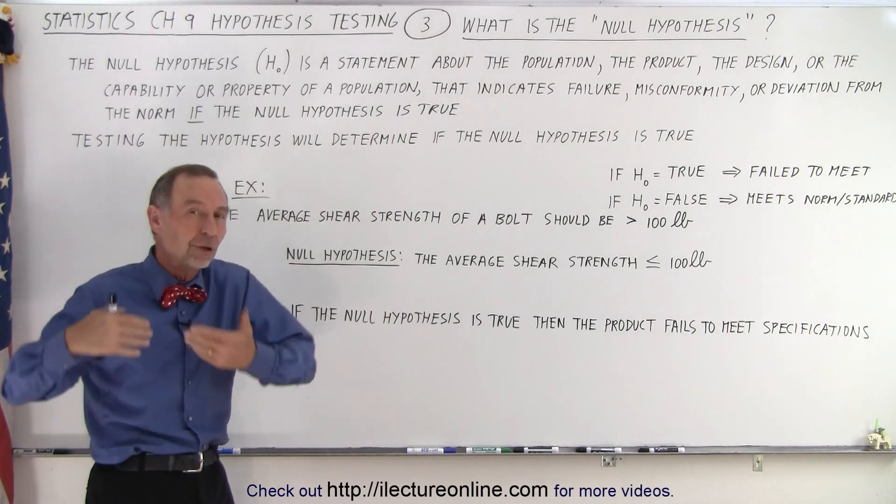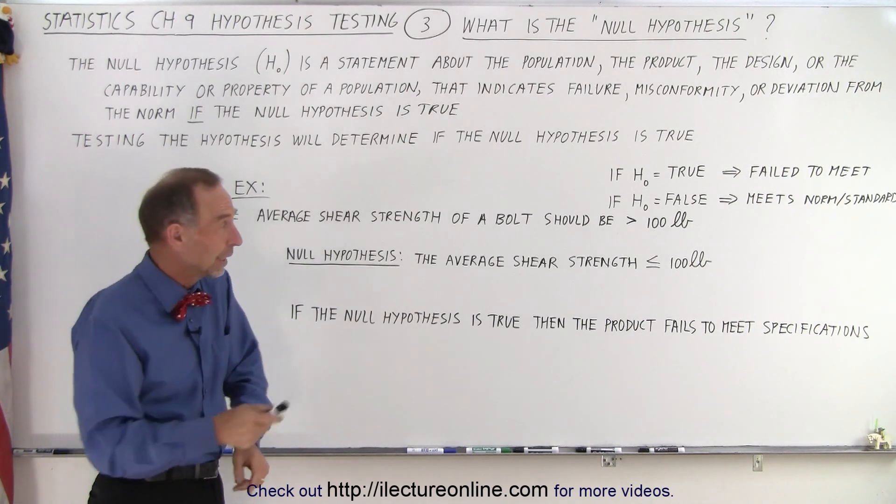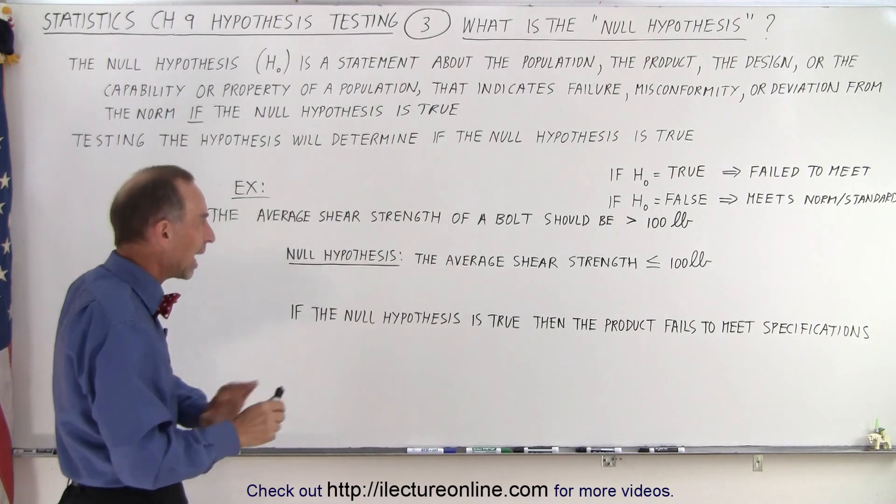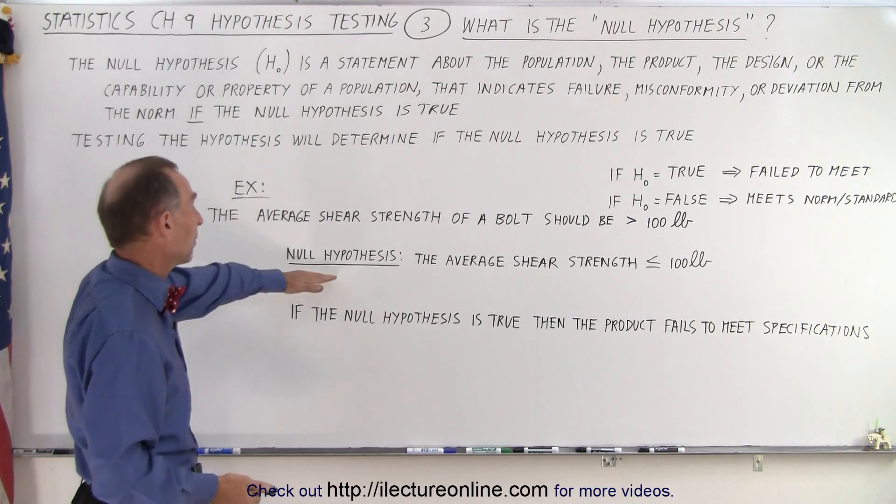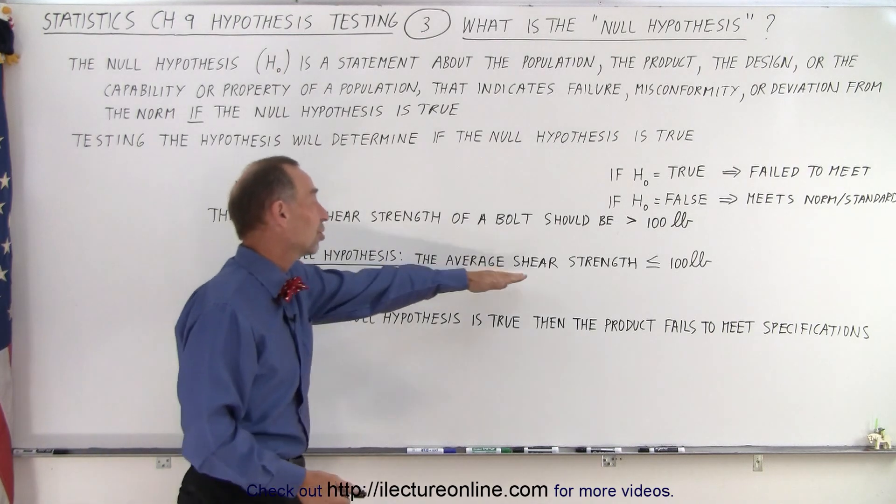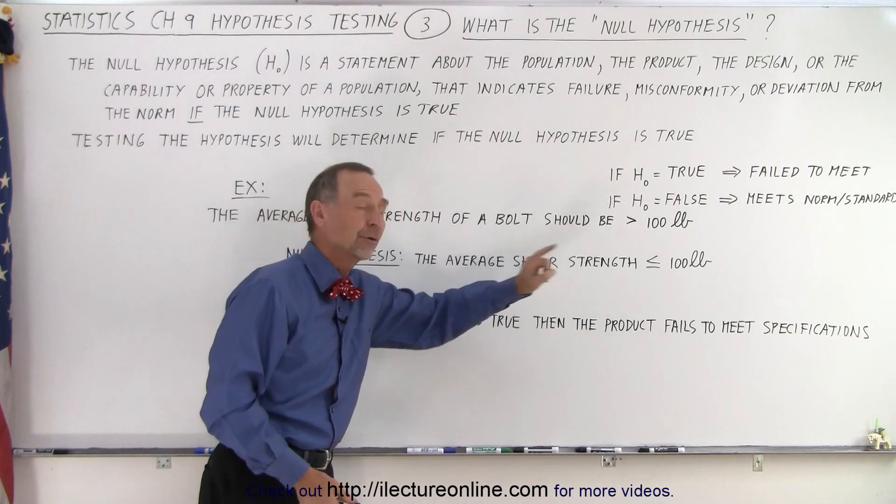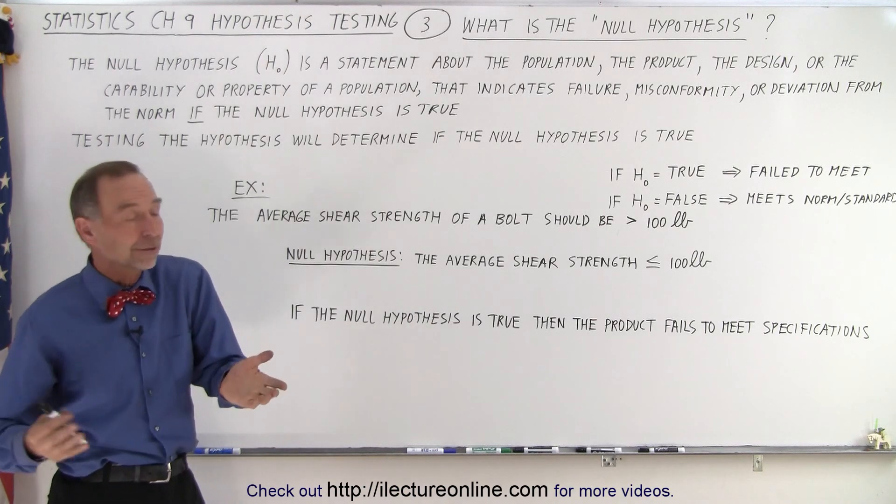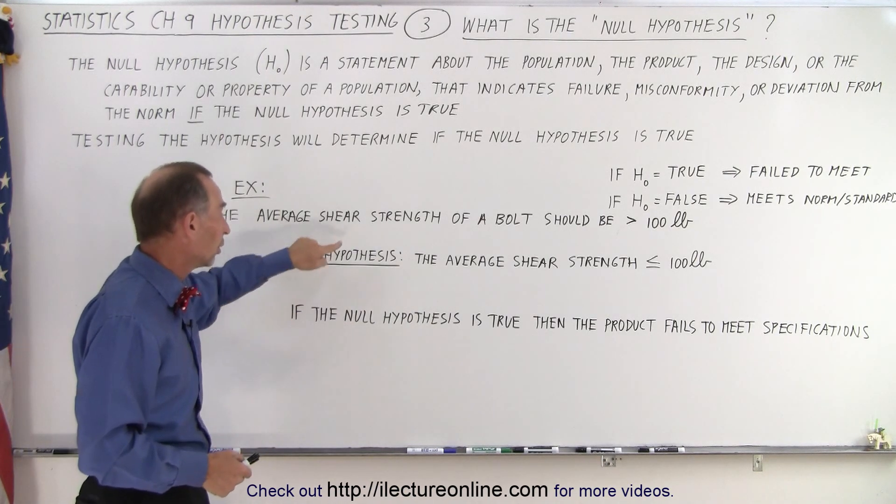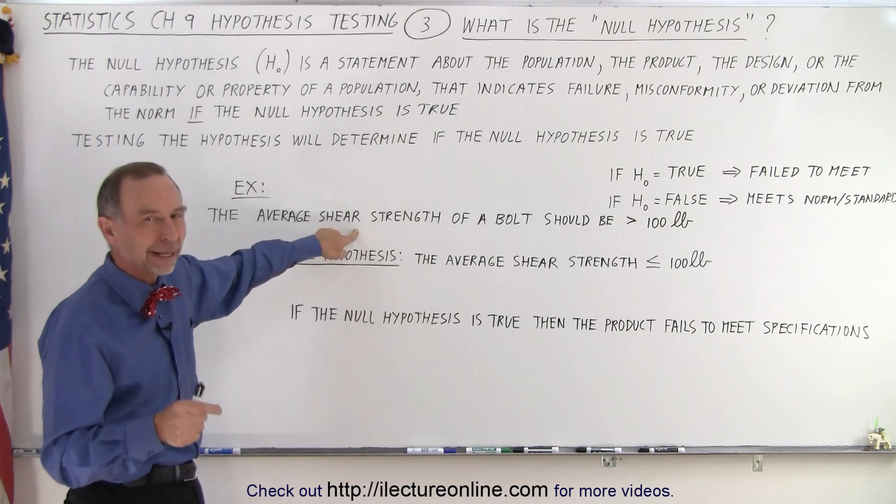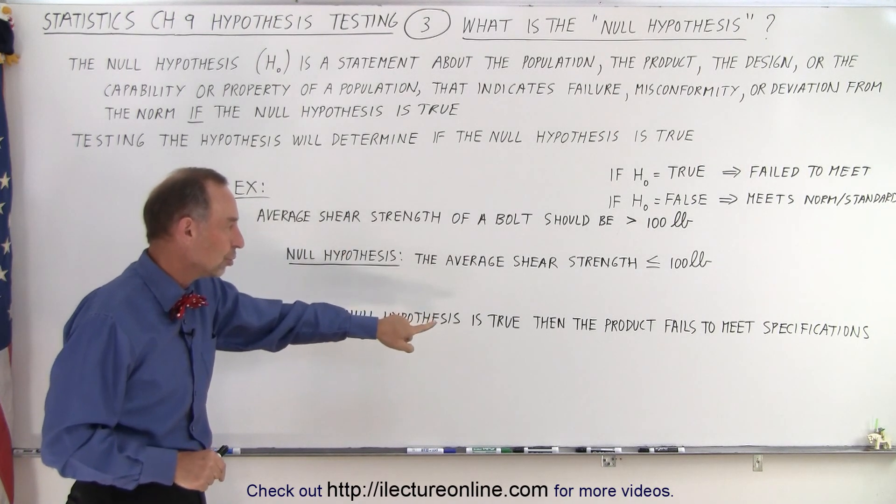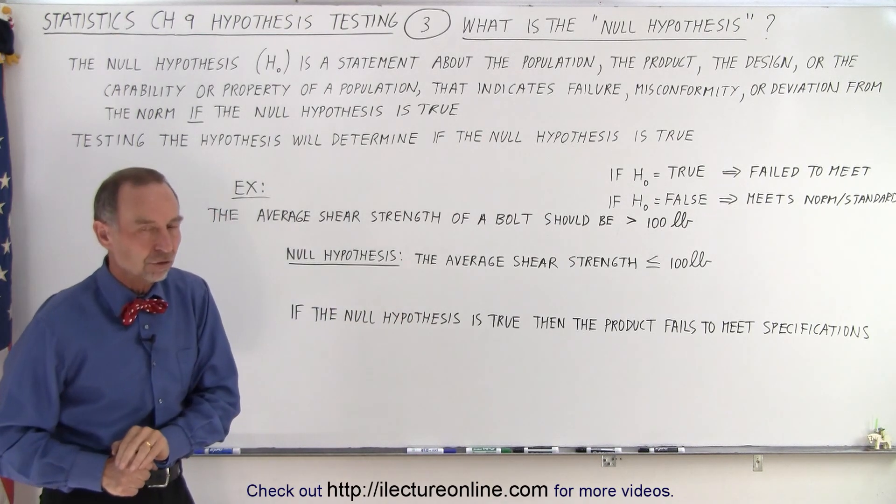So let's set up a null hypothesis that if it's true, that property or that condition or that specification will not be met. So the null hypothesis then is: the average shear strength is less than or equal to 100 pounds. If it's less than or equal, it cannot be greater than. So if this is true, the specifications are not met by that bolt. So if the null hypothesis is true, then the product fails to meet the specifications.